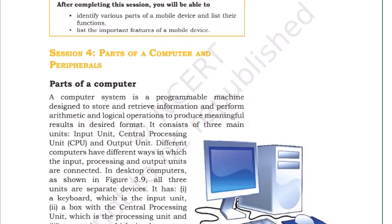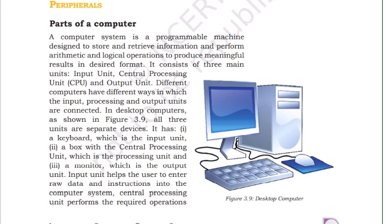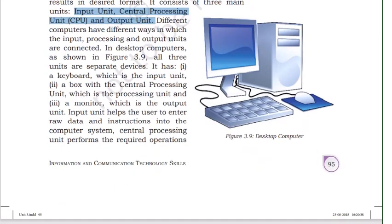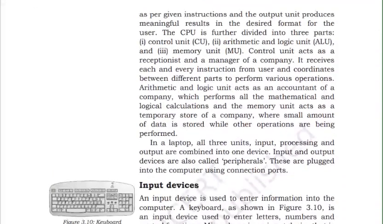Now let's start session four: Parts of Computer and Peripherals. A computer has three kinds of devices: the input unit, the central processing unit (CPU), and the output unit. Different computers arrange these units differently. In a desktop, individual parts are visible outside, while in a laptop, all parts are connected within one device.